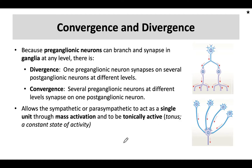One of the characteristics of the autonomic nervous system, and for that matter anywhere within the nervous system, is that we get some convergence and some divergence. Convergence, simply put, is when we've got multiple neurons synapsing onto a single neuron. This funnels information inward to one neuron.